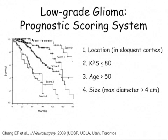This was a study from UCSF that suggests a prognostic scoring system for low-grade gliomas. Four factors were found to be of prognostic significance in survival of these patients, irrespective of treatment. The four factors are: location — tumors in an eloquent location are more difficult to resect, which plays into why location is a prognostic factor — Karnofsky performance status, age, and size of the tumor.